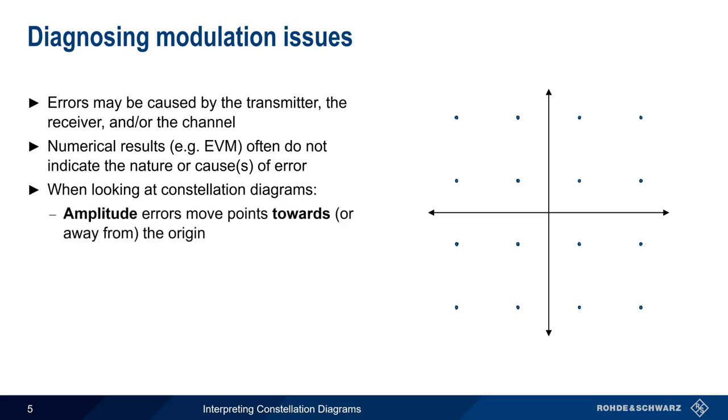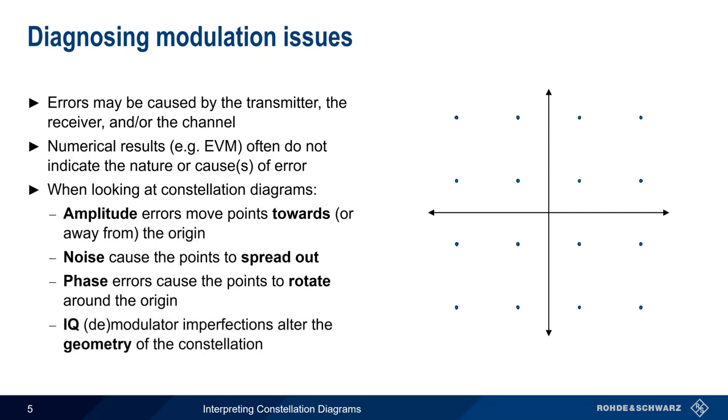These types fall into four main categories. First, amplitude linearity issues usually move some of the points towards the origin. Another type of amplitude issue is noise, which causes the receive points to spread out around the ideal or reference points. Undesired changes in the phase of the carrier cause the points to rotate with respect to the origin.